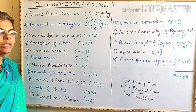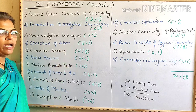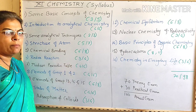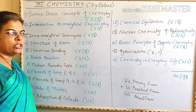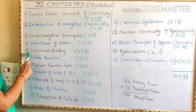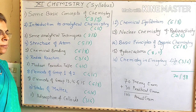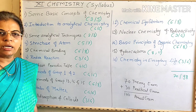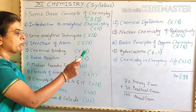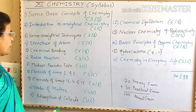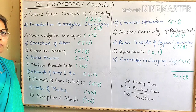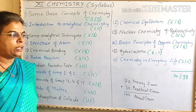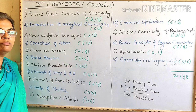The fourth topic is Structure of Atom. Weightage is 5 or 7 — 5 marks questions are compulsory and 7 mark questions are with options. The fifth topic is Chemical Bonding. Weightage is 6 or 8 — 6 marks questions are compulsory and 8 mark questions are with options. The sixth topic is Redox Reactions. Weightage is 3 or 4 — 3 marks questions are compulsory or 4 marks with options.